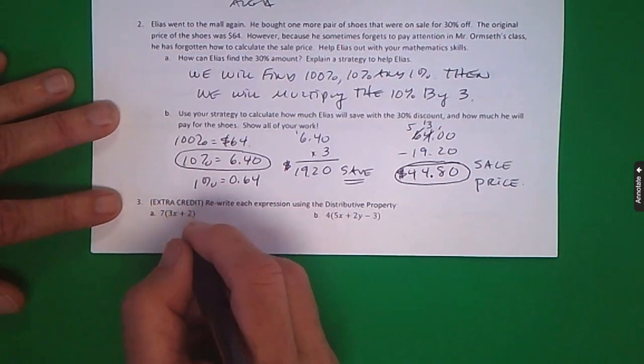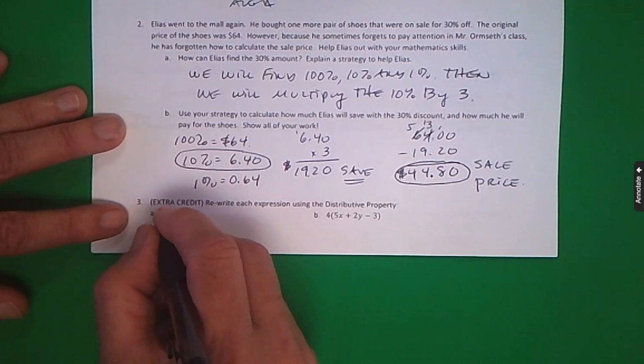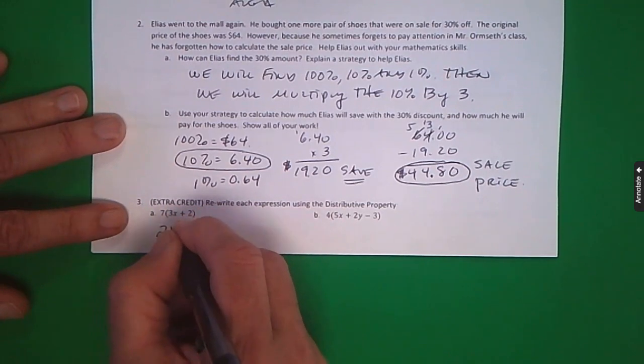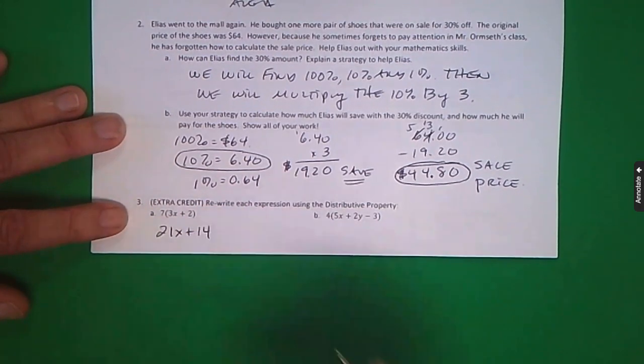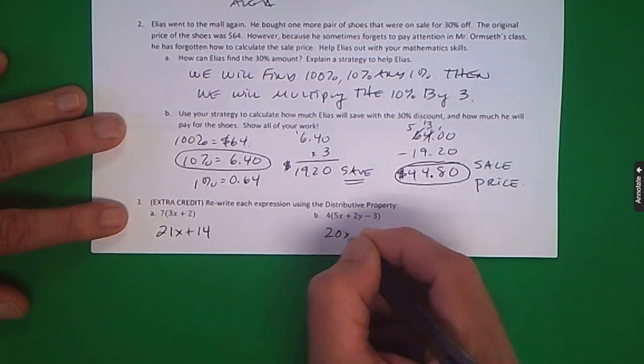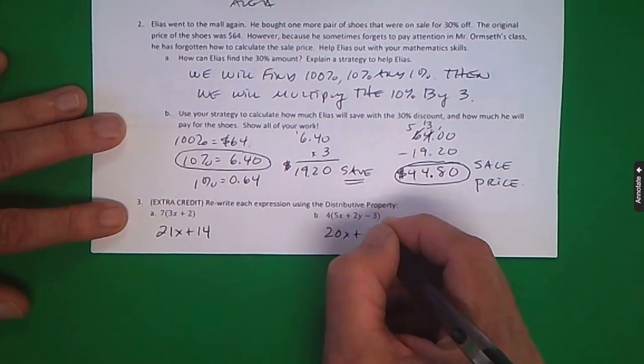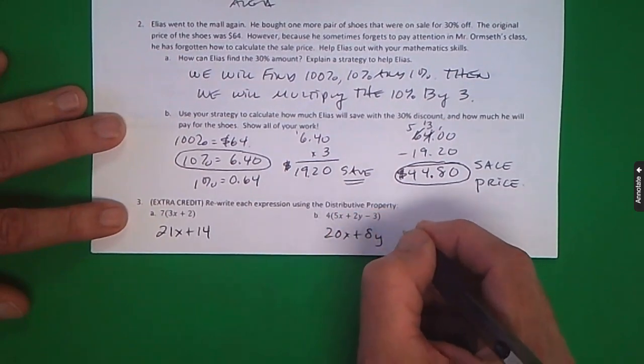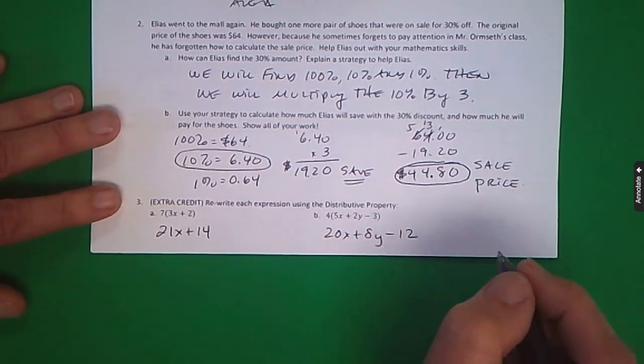Let's also touch on the extra credit real quick. You don't have to correct this, but just so you know, 7 times 3x is 21x. 7 times 2 is 14. Over here, 4 times 5x is 20x. 4 times 2y is 8y. 4 times 3 is 12.